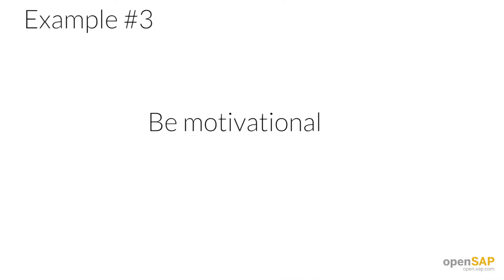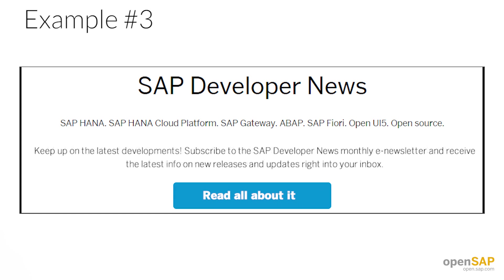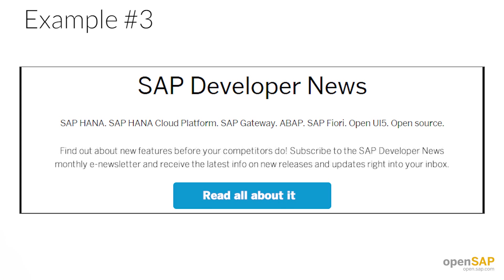Example three. Here's an example from one of our products that could use a bit of help. This isn't bad, but it could be more interesting. How about changing the 'subscribe to the news' button to 'get the latest news'? Or maybe even use newspaper language and say 'read all about it.' And saying 'a lot is happening at SAP' doesn't tell us much — it doesn't explain what's in it for the reader. Why would they want to subscribe? How about 'keep up on the latest developments'? Or 'find out about the new features before your competitors do.'